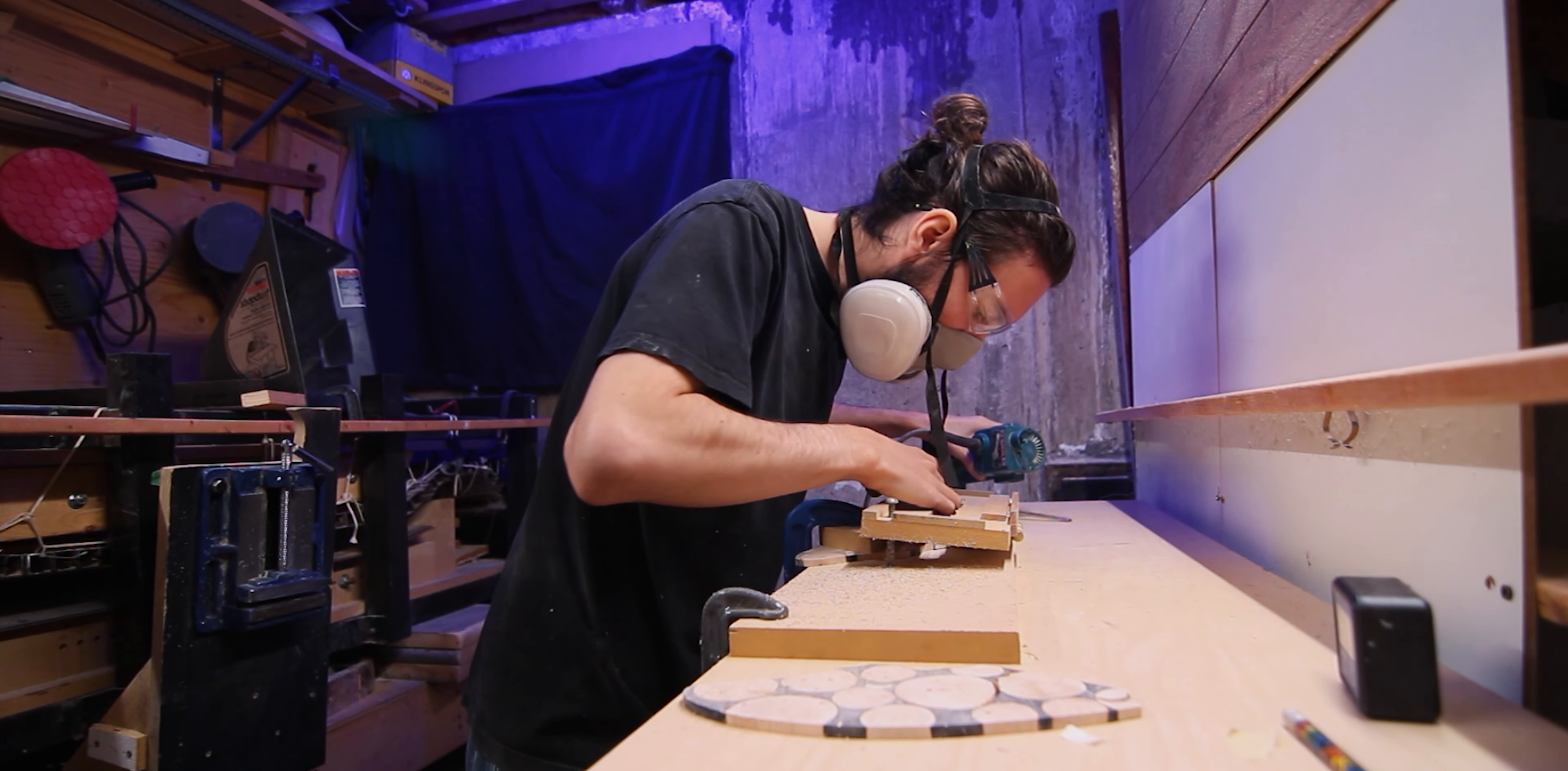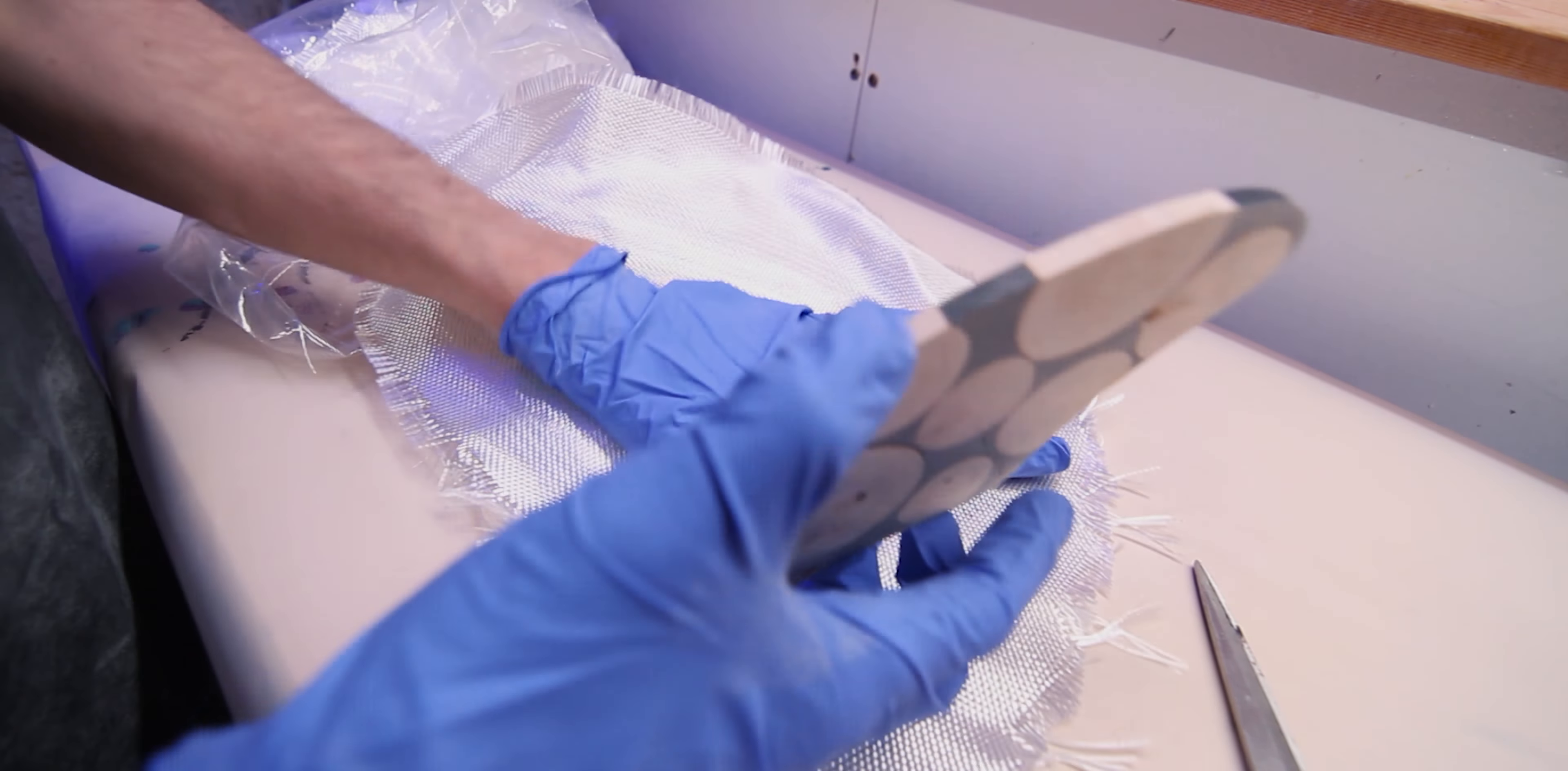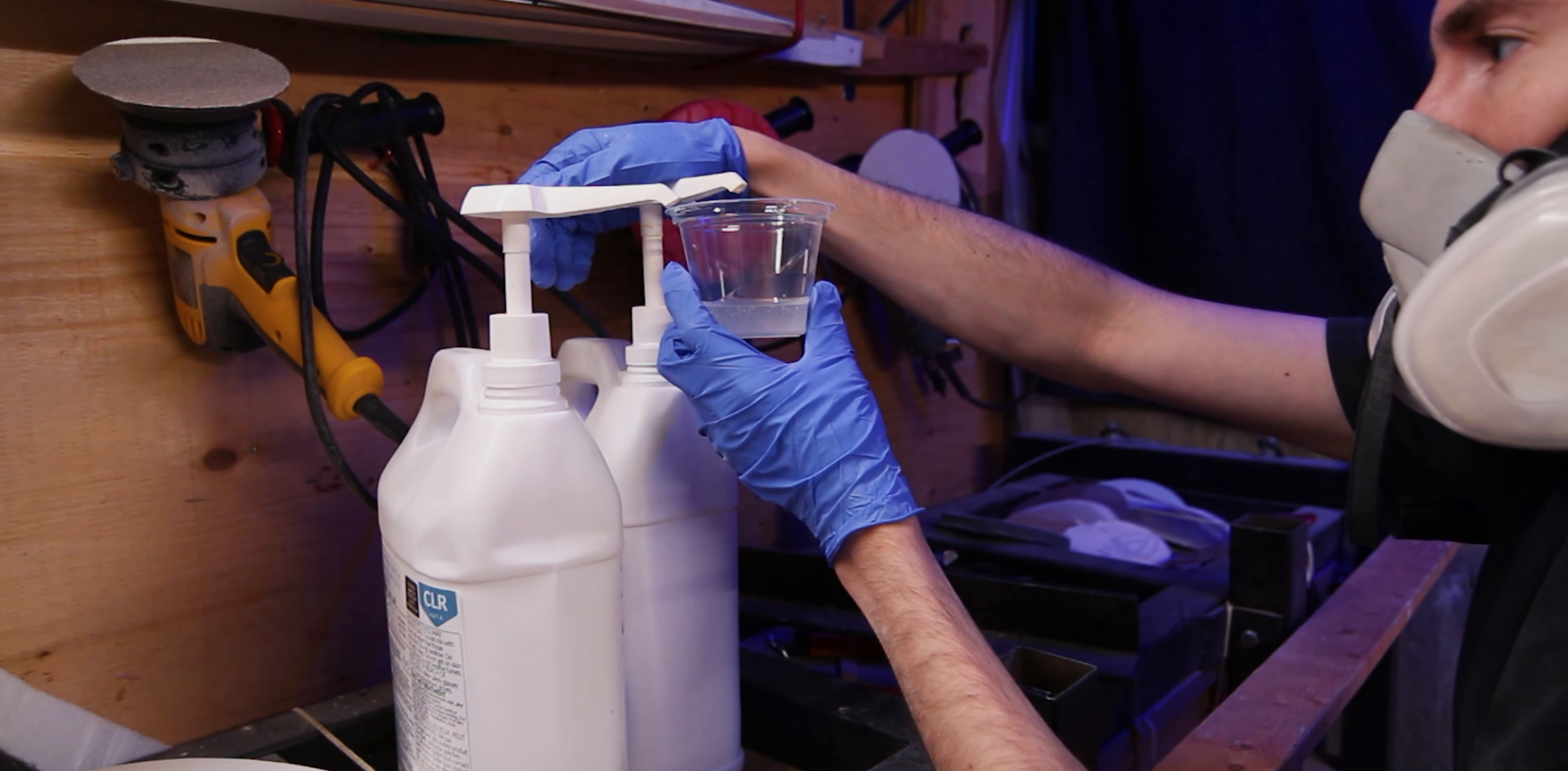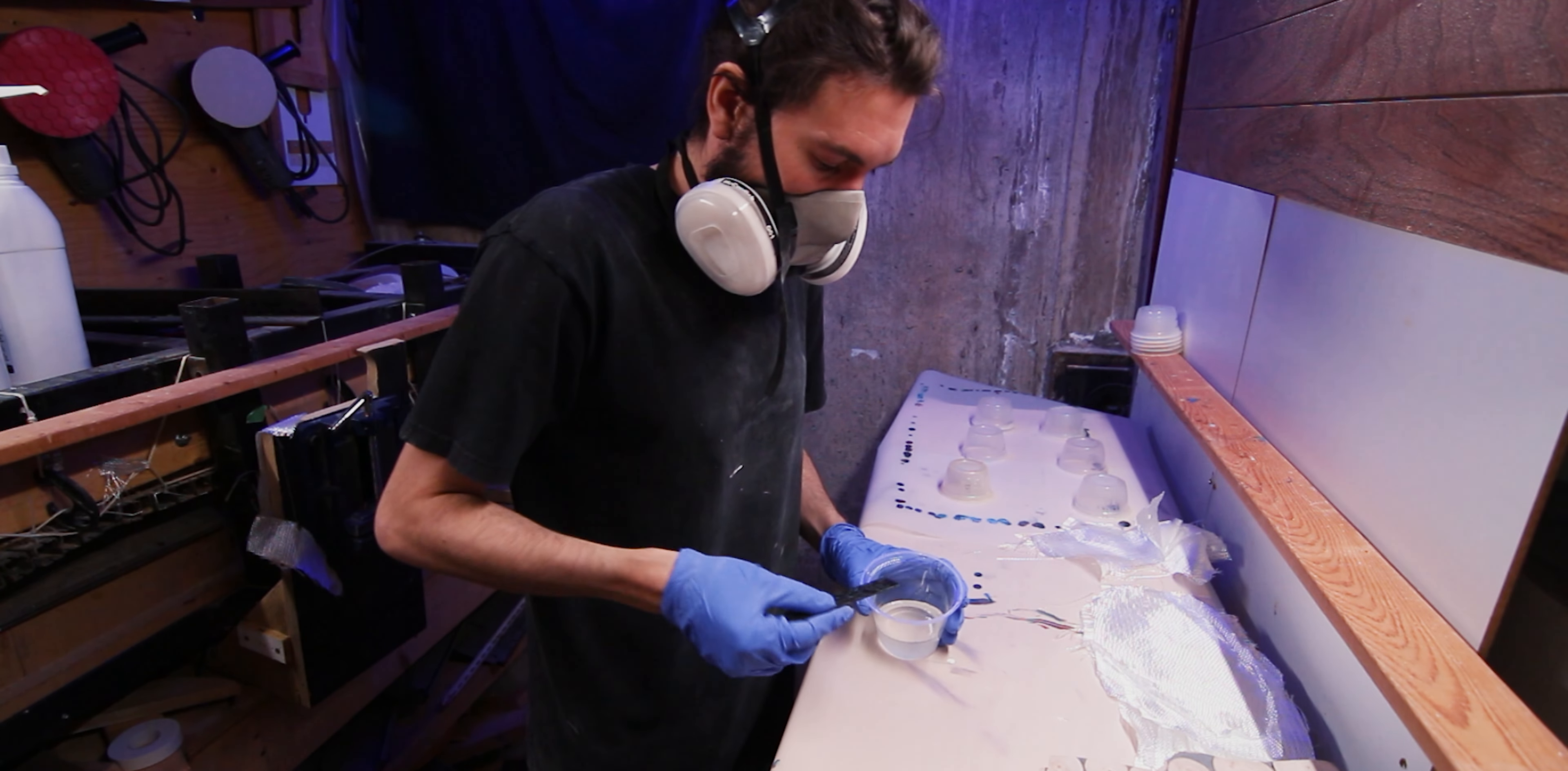Before I glass the insides of the fins, I'm going to sand them smooth to remove as much of the router marks as I can. Before I foil it, I'm going to glass the insides and this will just give the panel a little more strength so that it doesn't fall apart when I foil it.